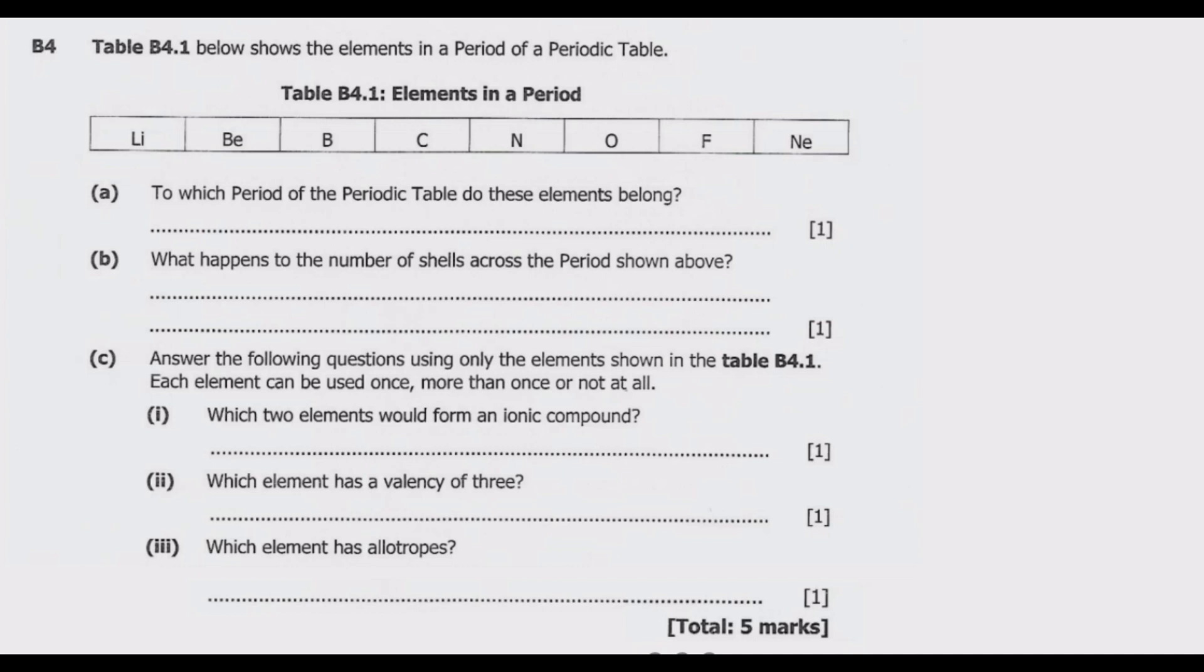Let us look at question B4. Table B4.1 below shows the elements in a period of a periodic table. Under table 4.1, we have elements in a period, ranging from lithium all the way to neon.